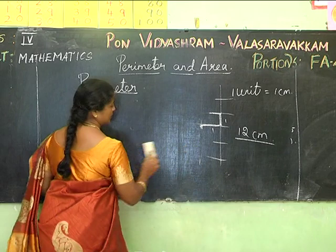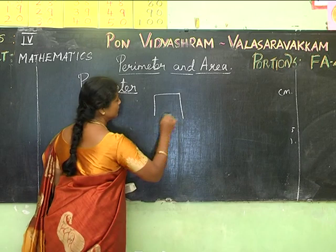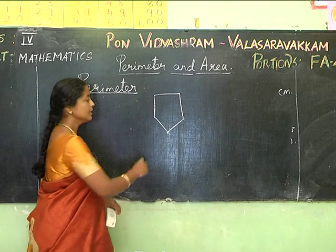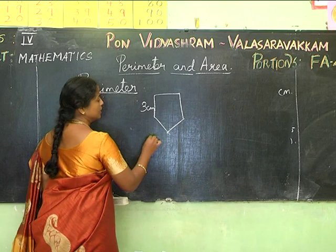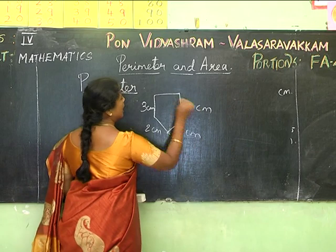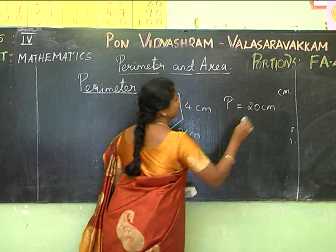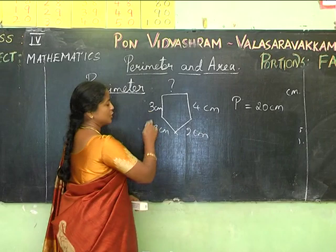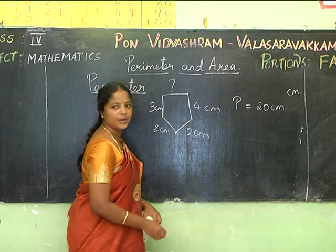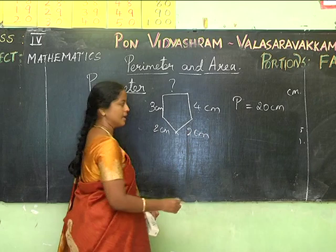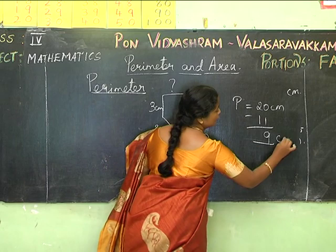Let's take another example: a pentagon where the given sides are 3 cm, 2 cm, 2 cm, and 4 cm, and the perimeter is 20 cm. To find the missing side: add the known sides — 3 + 2 + 2 + 4 = 11 — then 20 − 11 = 9 cm. So the missing side is 9 centimeters.